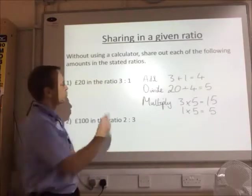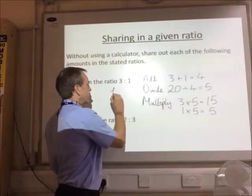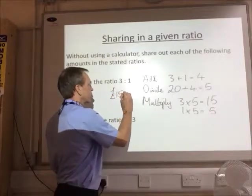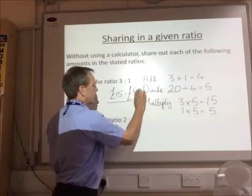So our answer is, once we share £20 out in the ratio 3 to 1, is £15 to £5. And that is the answer.